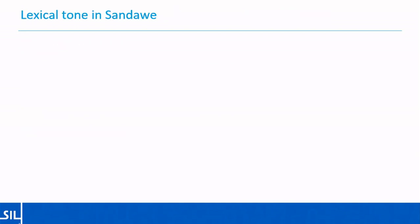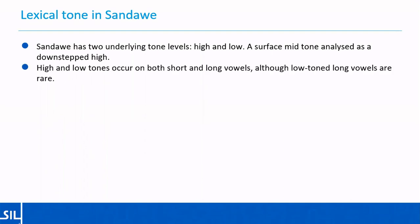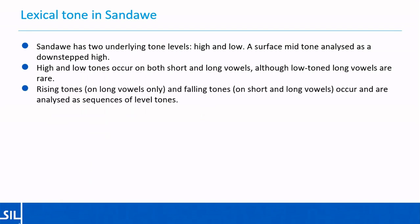Let's start with some basics of lexical tone in Sandawe. The language has two underlying tone levels, high and low. There is a surface mid-tone which can be explained as a down-stepped high. Sandawe has a phonemic vowel length contrast, and high and low tones occur on both short and long vowels, though low-toned long vowels are rare. Rising tones only occur on long vowels, but falling tones occur on both short and long vowels. All contour tones can be analysed as sequences of level tones. Word-final low tones fall slightly, which is relevant to recognising the difference between underlying highs and lows after grammatically conditioned tone lowering, as we'll see shortly.